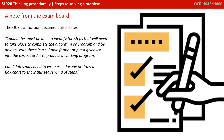A quick note for the exam board: the OCR clarification document states that candidates must be able to identify the steps that will need to take place to complete the algorithm or program, and be able to write these in a suitable format or put a given list into the correct order to produce a working program. Candidates may also need to write pseudocode or draw a flowchart to show this sequencing of steps.